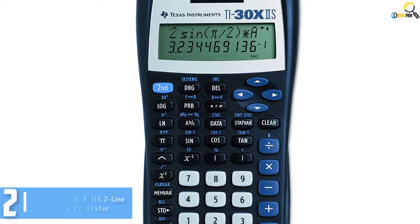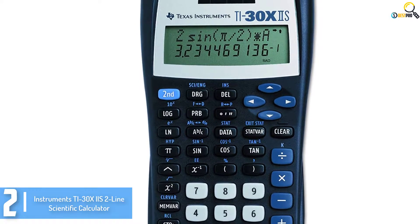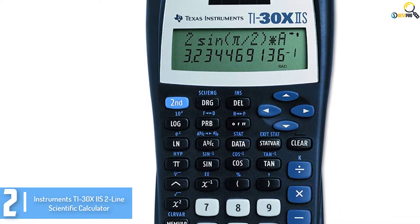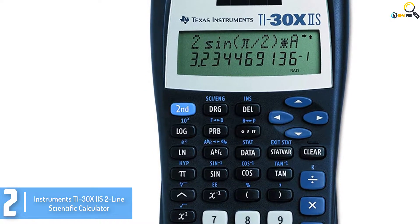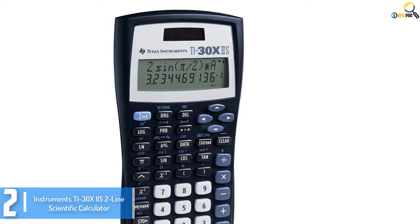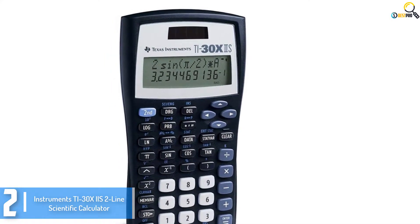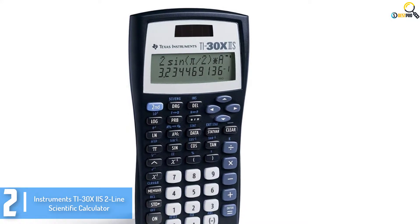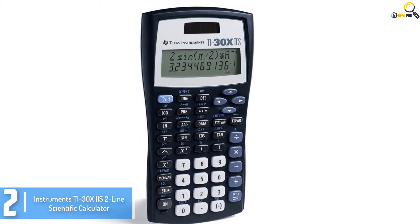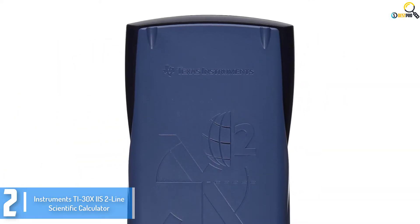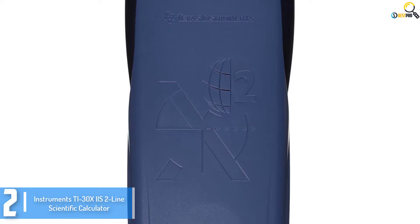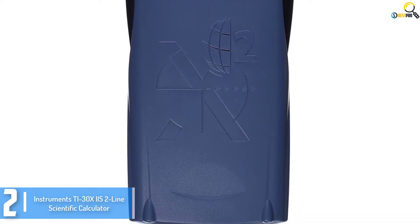At number 2, we have the Texas Instruments T30X-II's two-line scientific calculator. Are you searching out the excellent scientific calculator that you can use for diverse schoolwork? This is a high-quality and efficient calculator that is capable of managing one and two variable statistical calculations. In order to allow for a better display, it has a line display that is able to show the entry and calculated results at the same time. It is highly recommended for statistic students because it delivers quality results.